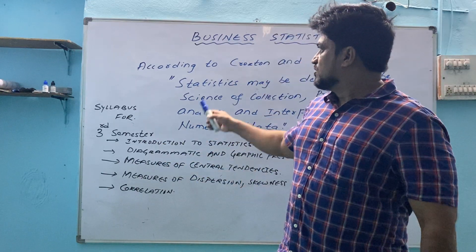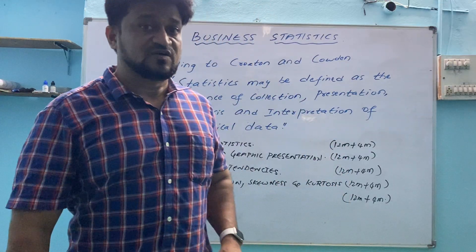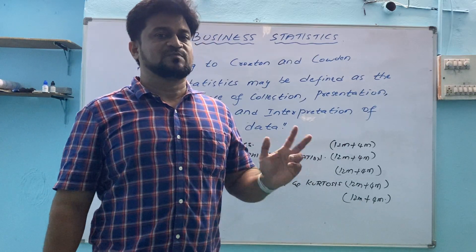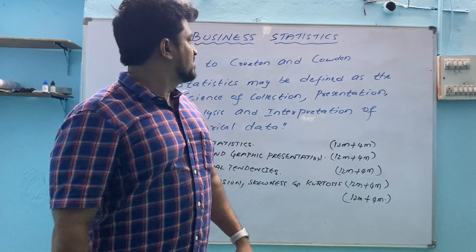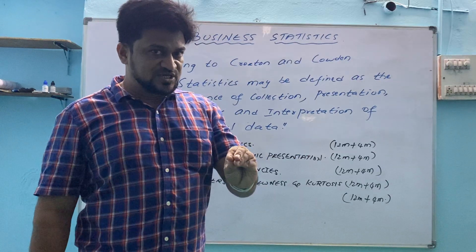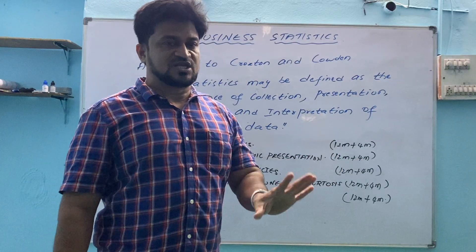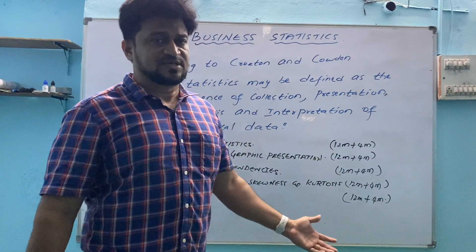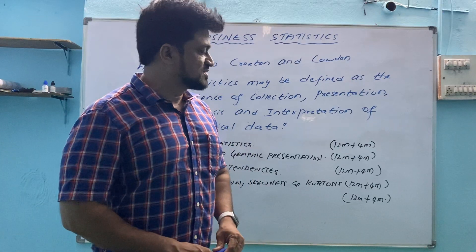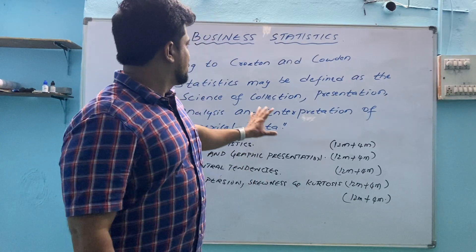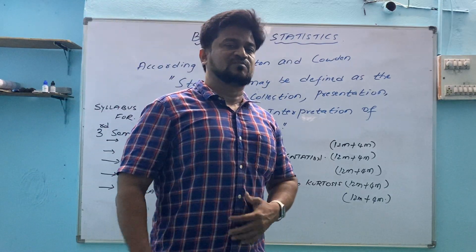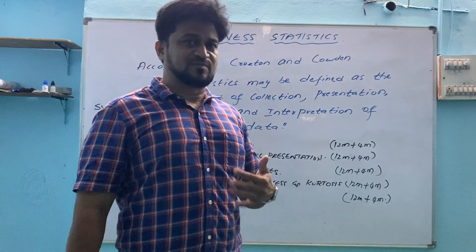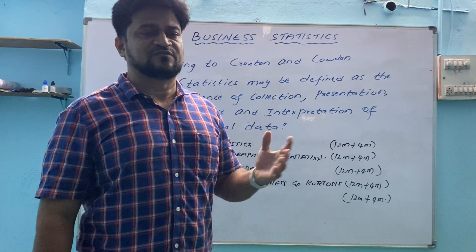First we will go through the definition of statistics. Your subject paper name is Business Statistics One, and in the fourth semester you will have Business Statistics Paper Two. For Business Statistics One there are five units, and each unit's weightage is 16 marks. We have to learn all five units. Many statisticians have given many definitions of statistics; the content across definitions is essentially the same.